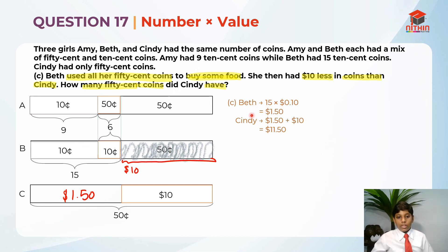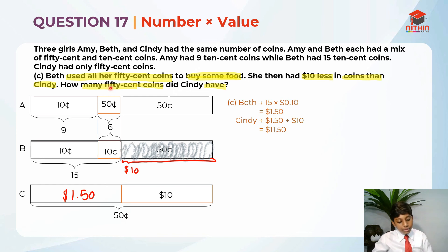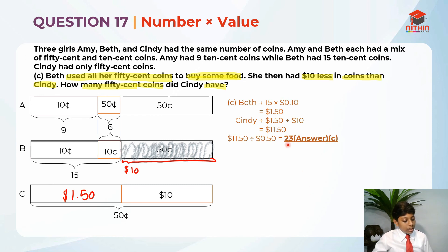To find the number of coins when we have the value, we take the total value divided by the value of each coin. So we take 11 dollars 50 cents divided by 50 cents, which gives us 23. So 23 is the answer for part C. I hope you understand my explanation for question 17 parts A, B and C. Thank you and bye, I'll see you in my next video.